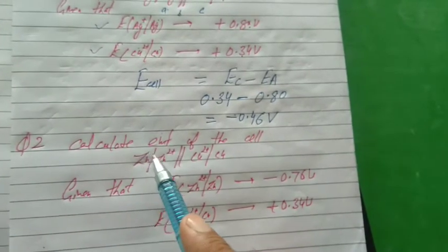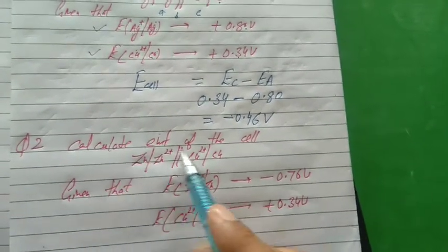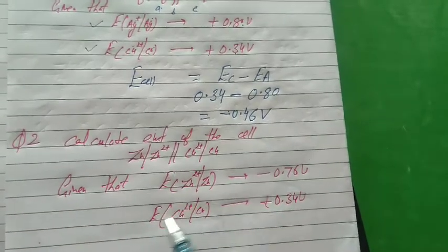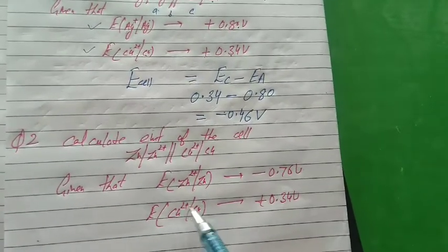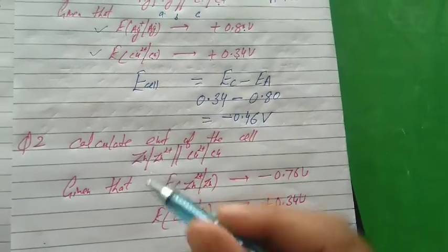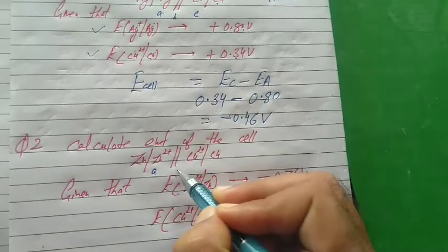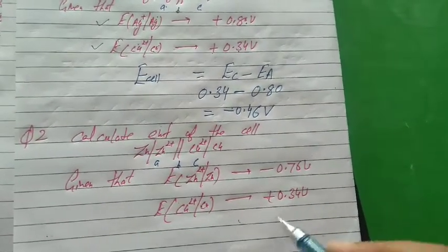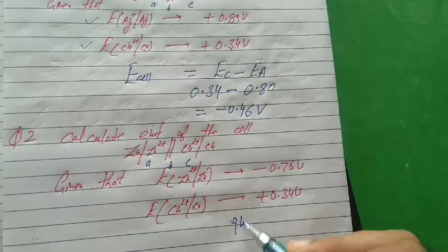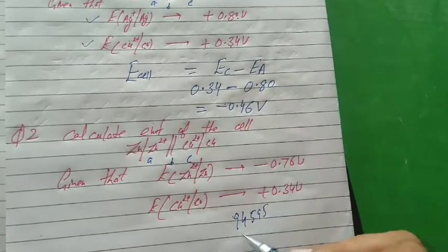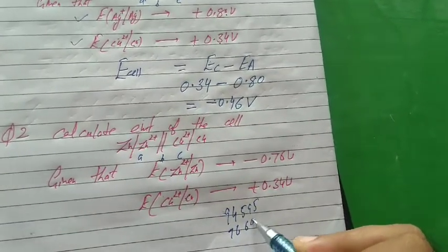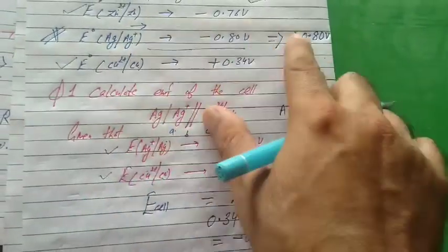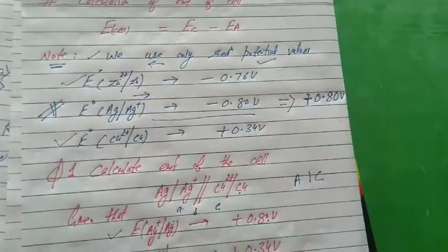Test your knowledge: calculate EMF of the cell given. Again, reduction potential values are given. Use ABC: electrode potential of cathode minus electrode potential of anode. Please solve it and send your answer. Only be careful: if in the question oxidation potential is given, then change the sign, because by convention we always use reduction potential values. Thank you.